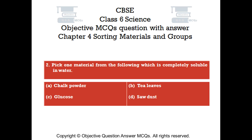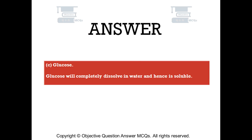Question number 2. Pick one material from the following which is completely soluble in water. Option A: Chalk powder. Option B: Tea leaves. Option C: Glucose. Option D: Sawdust. The right answer is Option C — Glucose. Glucose will completely dissolve in water and hence is soluble.